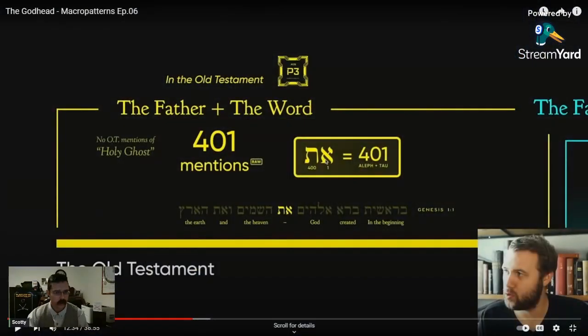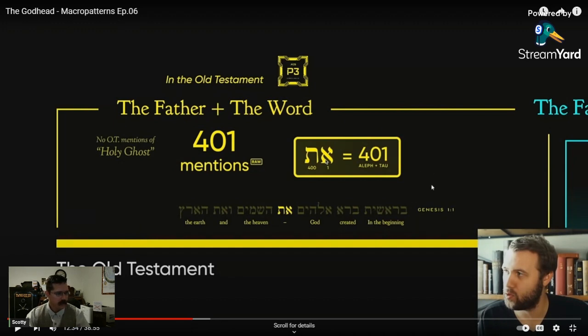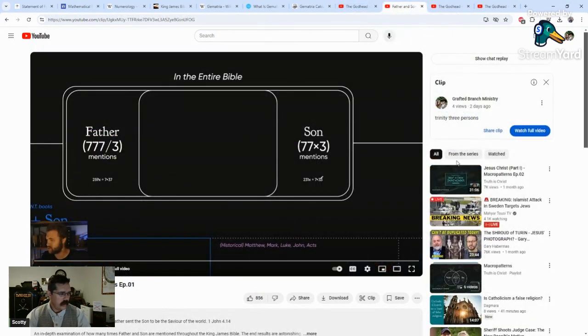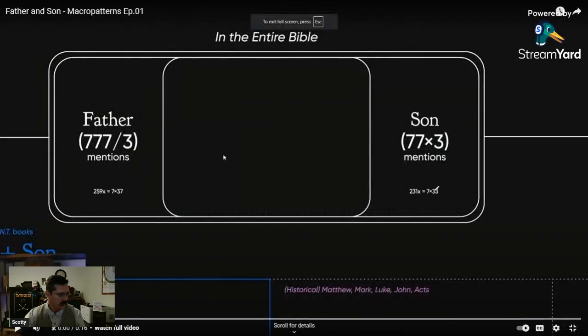Gematria — setting a numerical value to something in and of itself — is numerology. This is what he's doing, and then he says he's not doing that. This guy is enchanting and bewitching you by showing a false knowledge, having a false preface, trying to imply this is basically the Holy Ghost, because it's connected to the same number of times when the capital W Word appears — which is nowhere in the Old Testament. There are six total mentions of the capital W Word, and we'll look at that later.